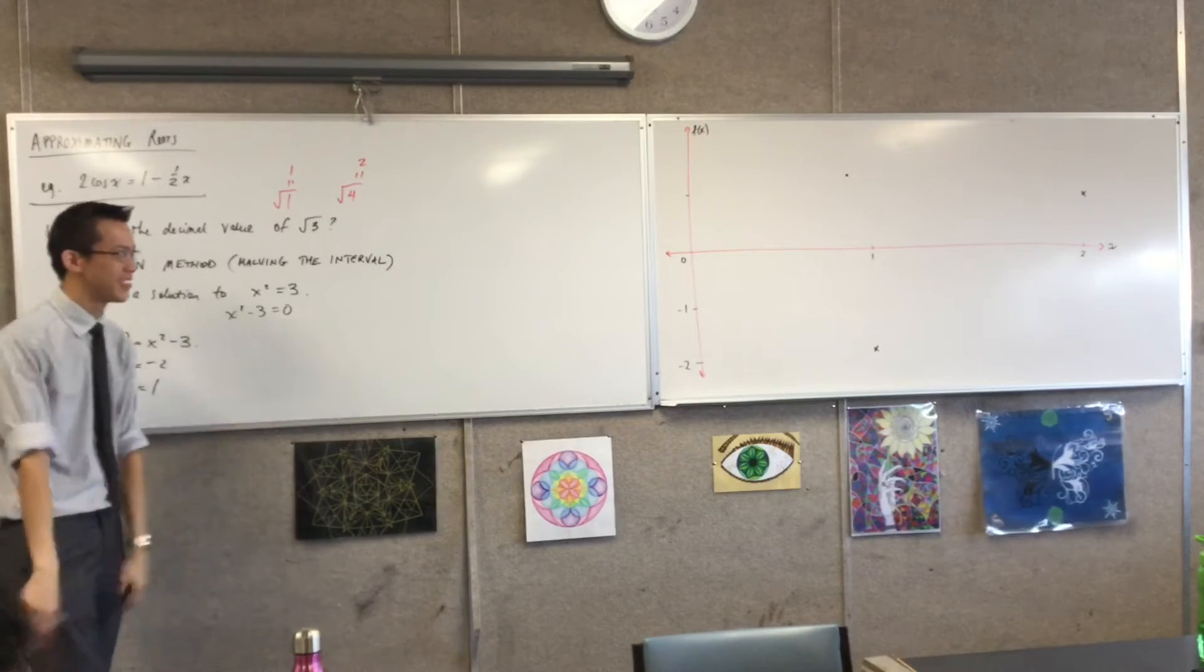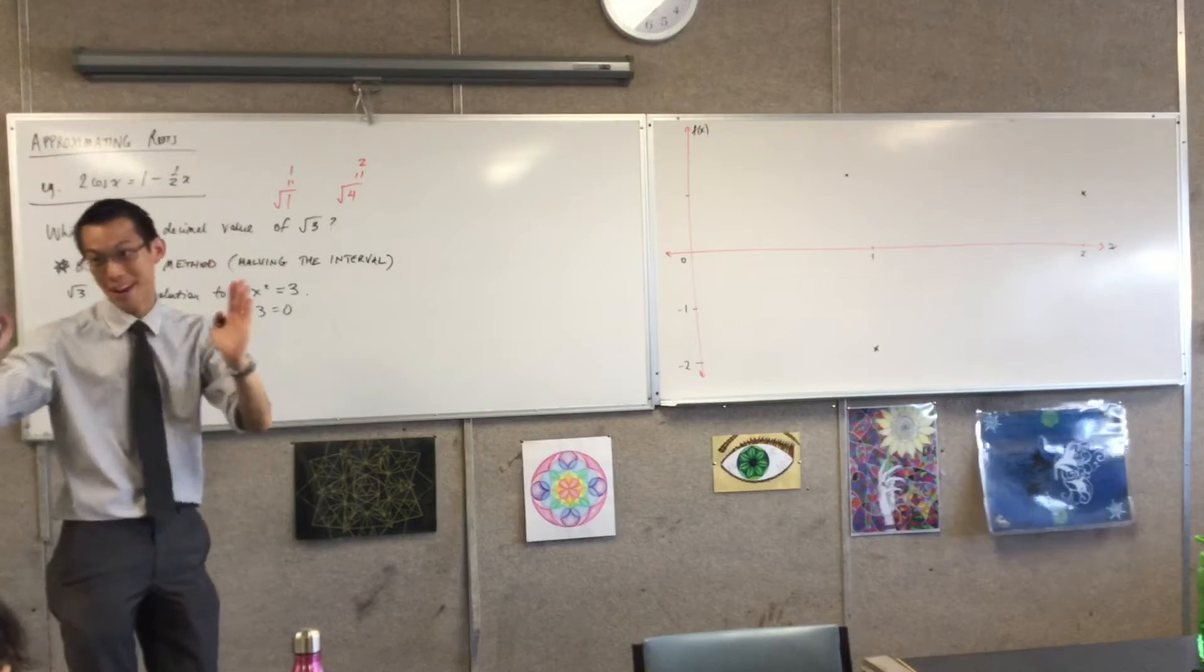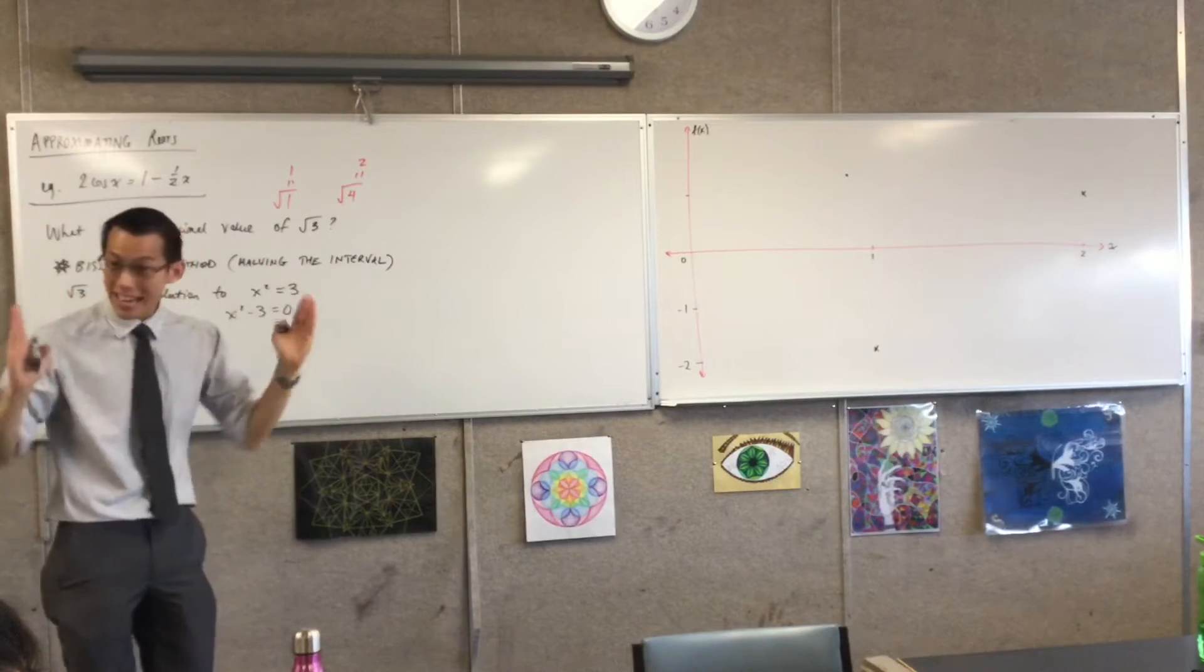But somewhere in between, from one to two, that's a big range. So I want to make this, I want to narrow this down, right?